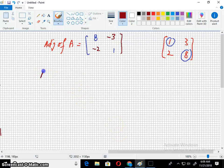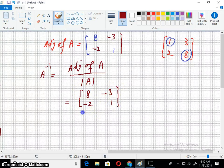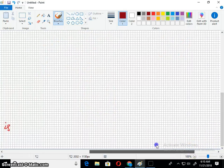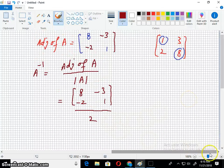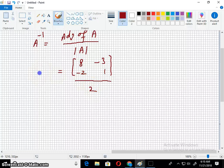The formula to find inverse of A is: A inverse equals adjoint of A divided by the determinant. So adjoint of A is eight, minus three, minus two, and one. And determinant of A was two. Let me check. Yes, it is two.